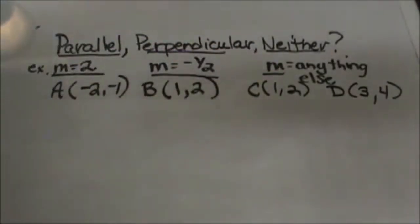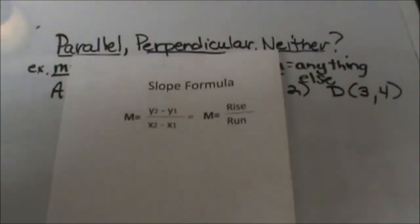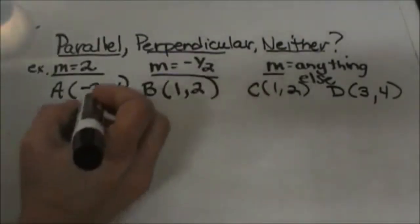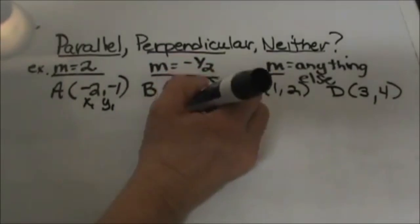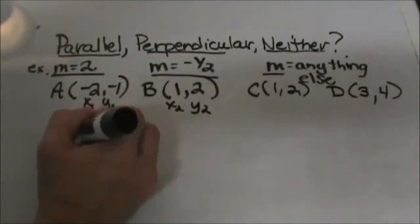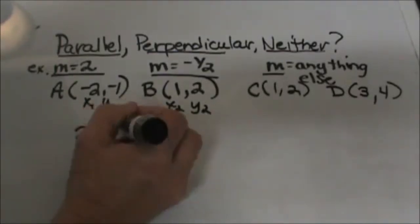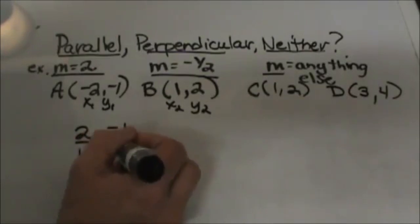So let's start off with the slope formula. The slope formula is y2 minus y1 over x2 minus x1. Let's plug in, and I have x1, y1, x2, y2. So I take the difference of my y's on top, 2 minus negative 1 over 1 minus negative 2.